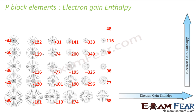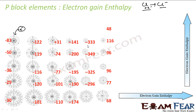The next is electron gain enthalpy — the amount of energy released when an isolated gaseous atom accepts one electron to become a gaseous ion. For example, chlorine becomes Cl⁻. It is about taking an electron, not giving one. In most cases the value is negative, meaning energy is released when they accept an electron.